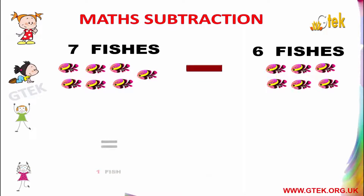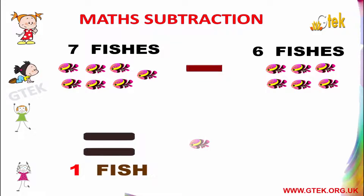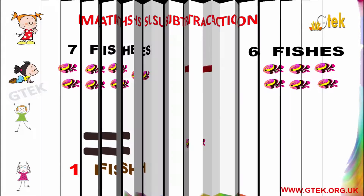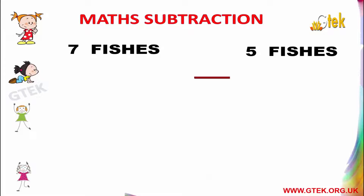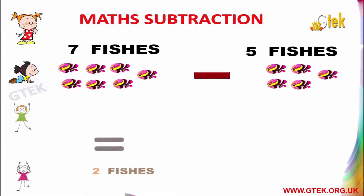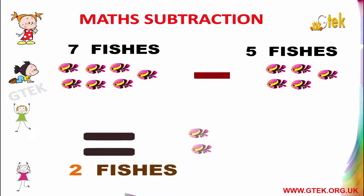7 fishes minus 6 fishes equals to 1 fish. 7 fishes minus 5 fishes equals to 2 fishes.